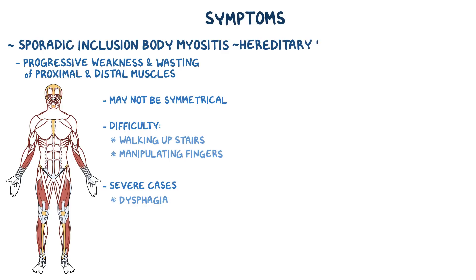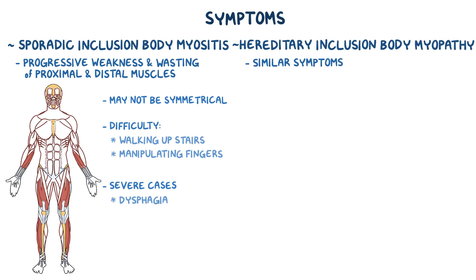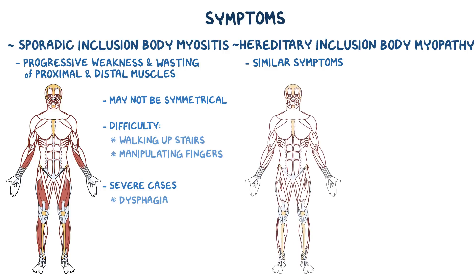Hereditary inclusion body myopathy has very similar symptoms, with the key difference being that instead of the quadriceps muscle, it mainly affects the tibialis anterior in the lower leg, resulting in difficulty walking on heels and difficulty running.